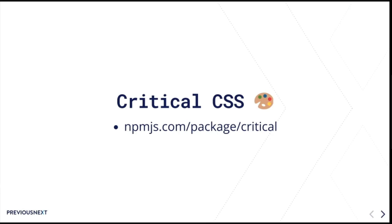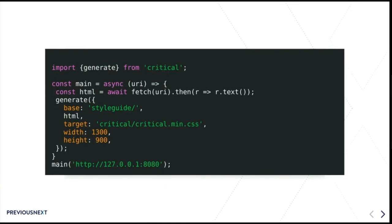At Previous Next we generate multiple critical CSS files along template lines — an article template, an event template — each with a separate critical CSS file. We use a naming pattern like critical--event or critical--article. In Node.js you import the package, fetch a URL to get the HTML, call the generate function, and tell it where to output. This is integrated into the build process and only needs to be updated when you're changing things that affect above-the-fold content.